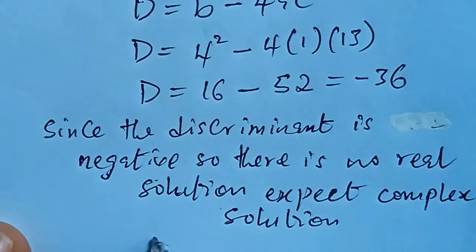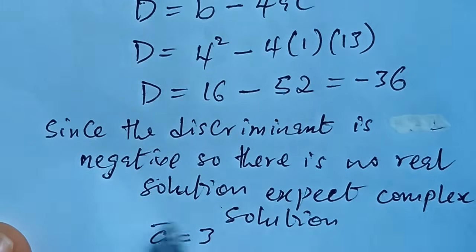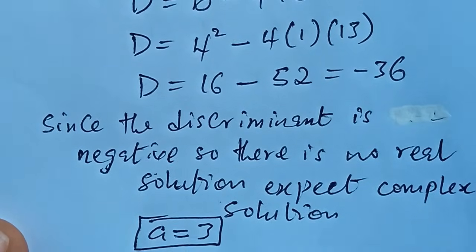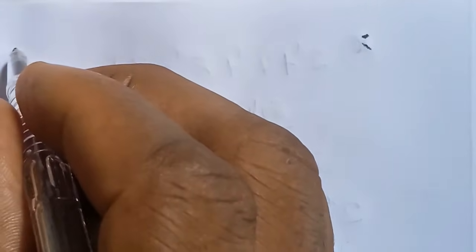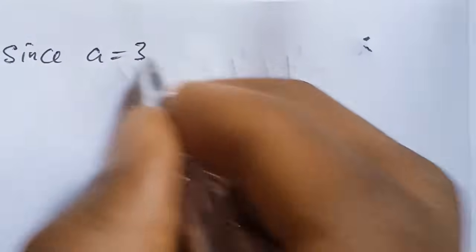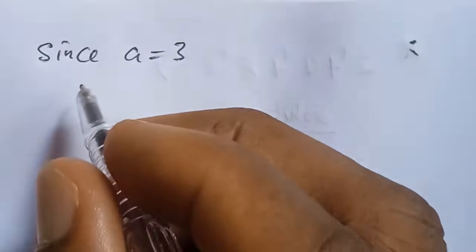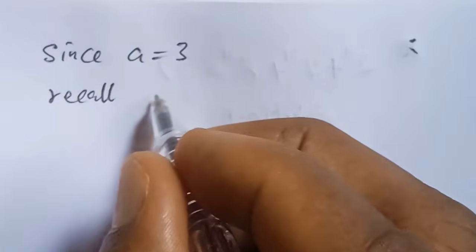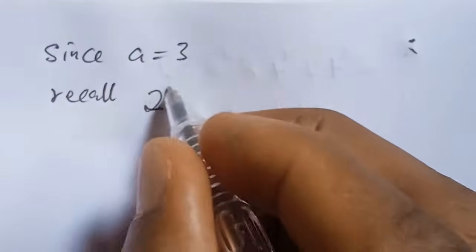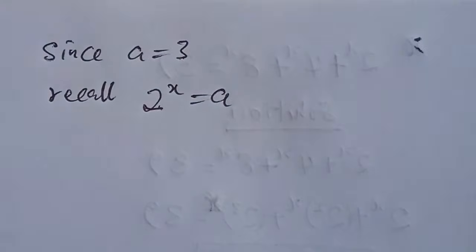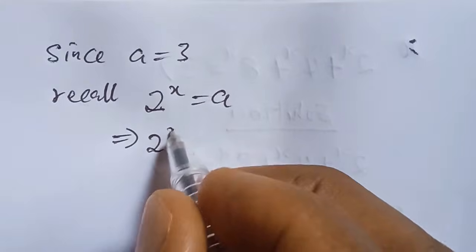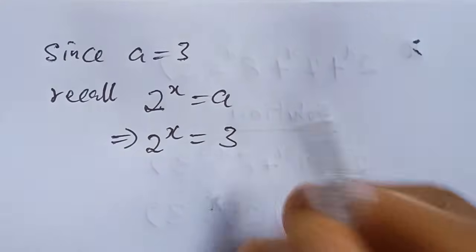So what we now do is to stick to our value of a, which is 3. Since a is equal to 3, we recall that 2 to the power of x is equal to a, so this implies that 2 to the power of x is equal to 3.